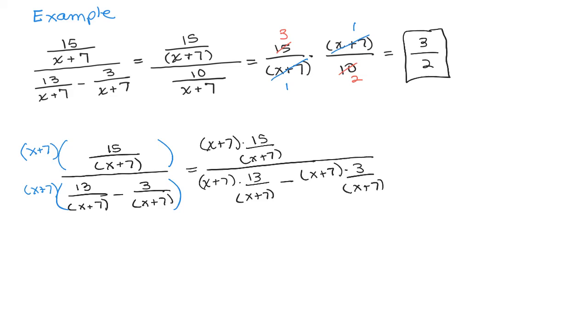So you kind of notice it gets kind of messy, and you don't have to write out this step if you could do this in your head, the canceling, but be careful. So the X plus 7s cancel here. The X plus 7 cancels here for this term, and this other one, they cancel. So you see all the different places the X plus 7s cancel.